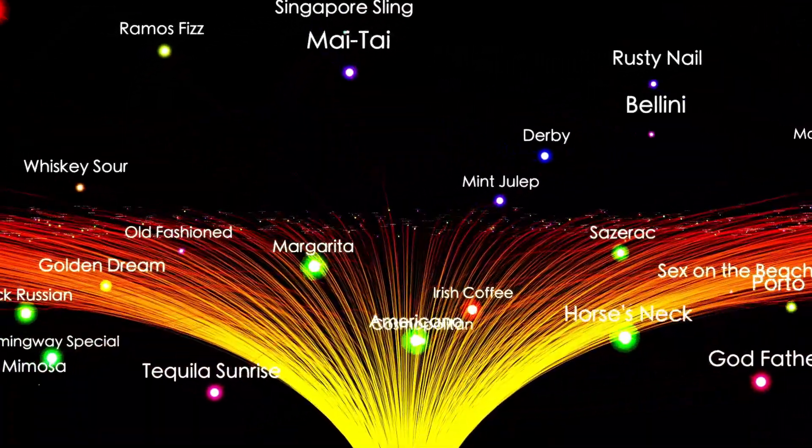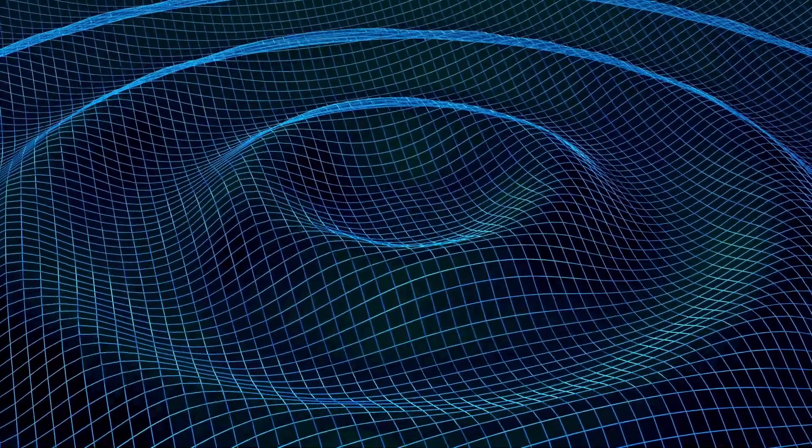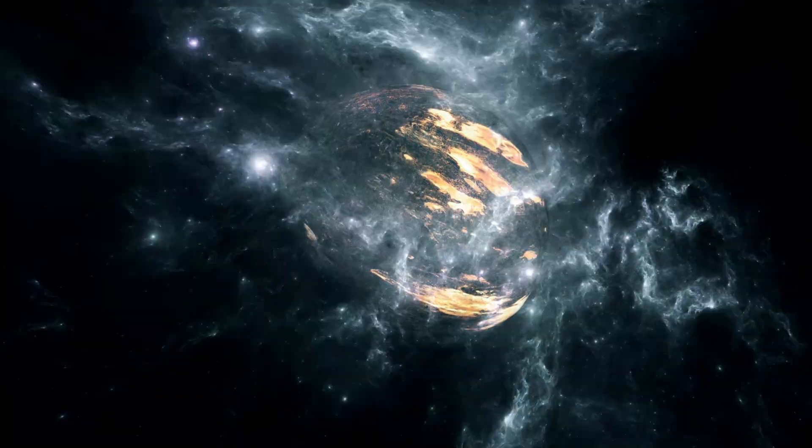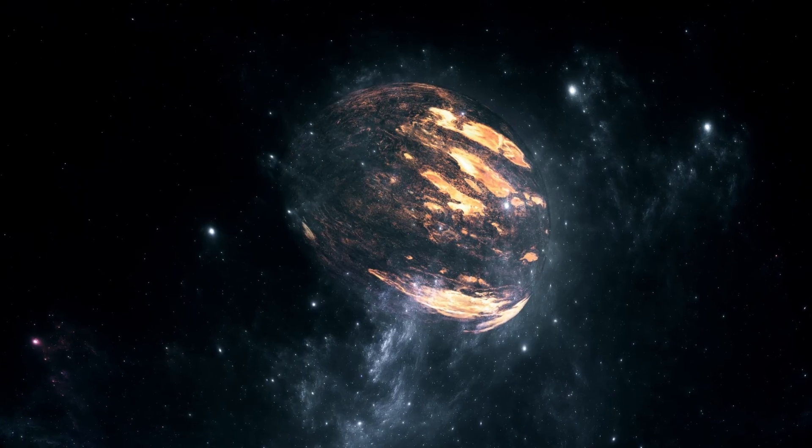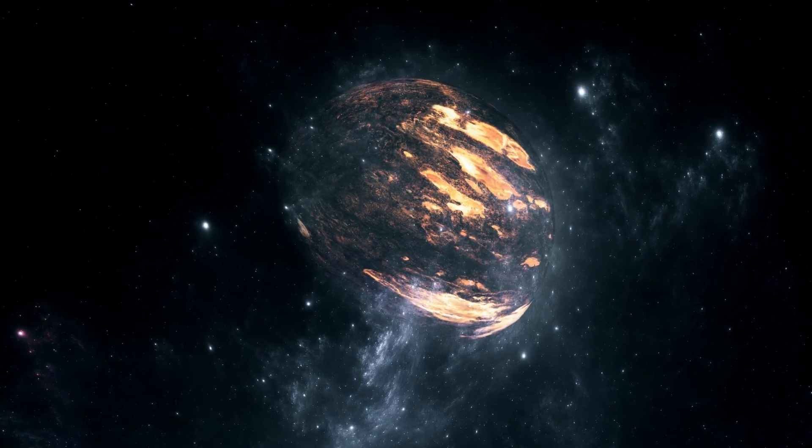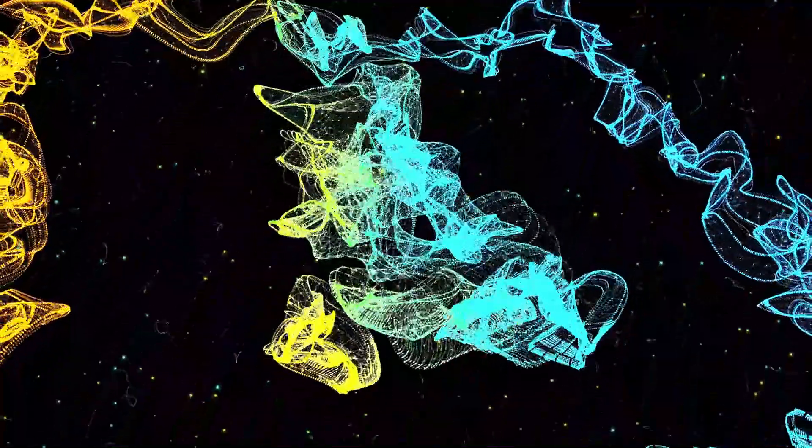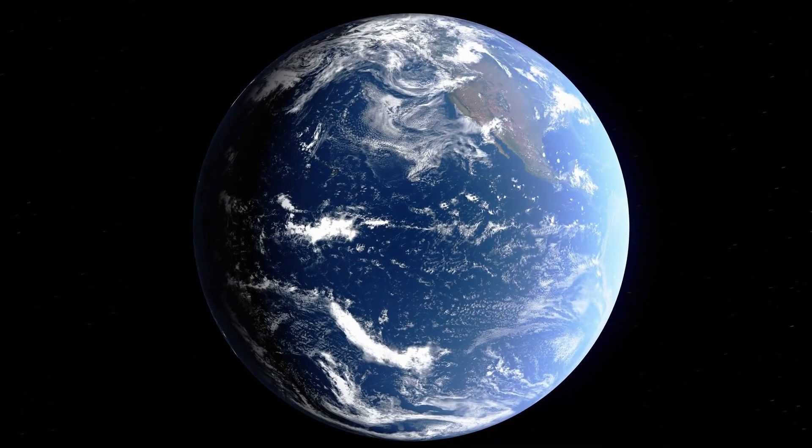This newfound brightness also reinvigorates ongoing inquiries into the inner workings of red supergiants. These massive stars defy easy classification due to their colossal size and turbulent interiors, which generate complex and unpredictable dynamics. Betelgeuse, in particular, has long baffled scientists with its irregular light variations. Determining the cause behind this dramatic 250% increase in brightness may unlock critical knowledge about the life cycles of red supergiants and the physical processes driving their instability.